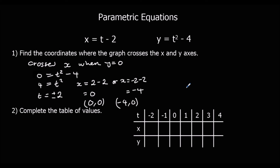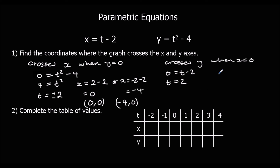It crosses the y-axis when x equals 0. Setting x equals 0 gives 0 equals t minus 2, so t equals 2. We already found this case: y equals 2 squared minus 4, which is 0. So it crosses the y-axis at (0, 0), which we already knew from our earlier calculation.